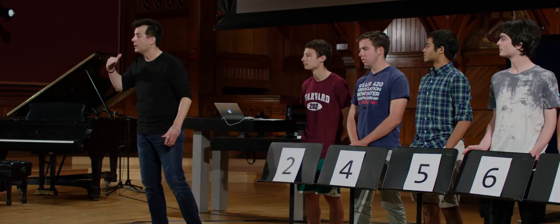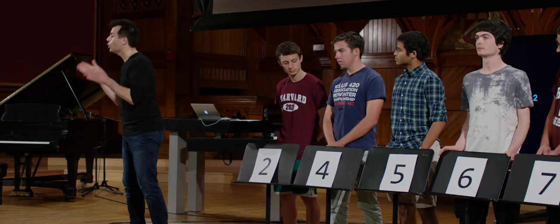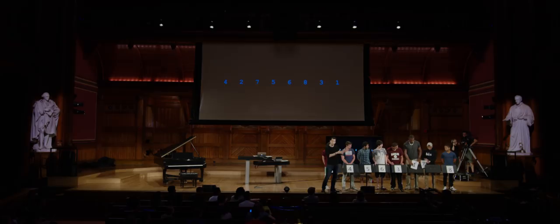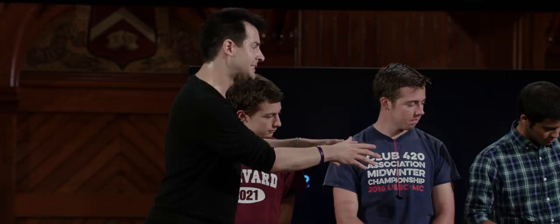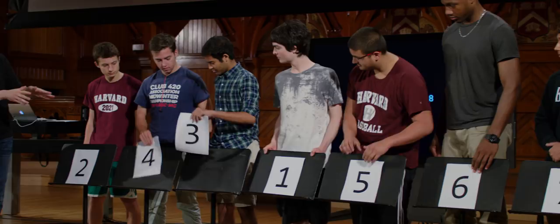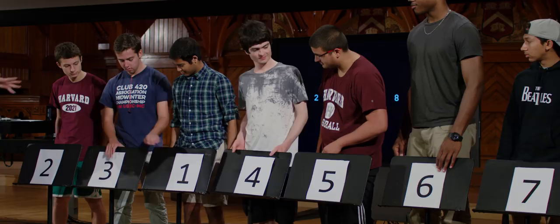Continuing bubble sort: make another pass through the list, fixing pairs out of order. After each pass, the next-largest element has bubbled to its correct position. Since we know 8 is already in place, we can stop short of the last element on subsequent passes, making the algorithm slightly more efficient. We keep repeating until no swaps are needed. After several passes through the volunteers swapping pairwise, the list is finally sorted.